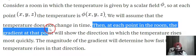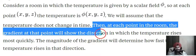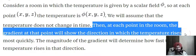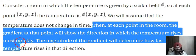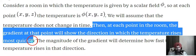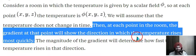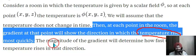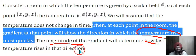At each point in the room, the gradient at that point will show the direction in which the temperature rises most quickly. The physical meaning of the gradient is: in which direction is there more change in temperature, and the magnitude tells us how fast the temperature rises in that direction.